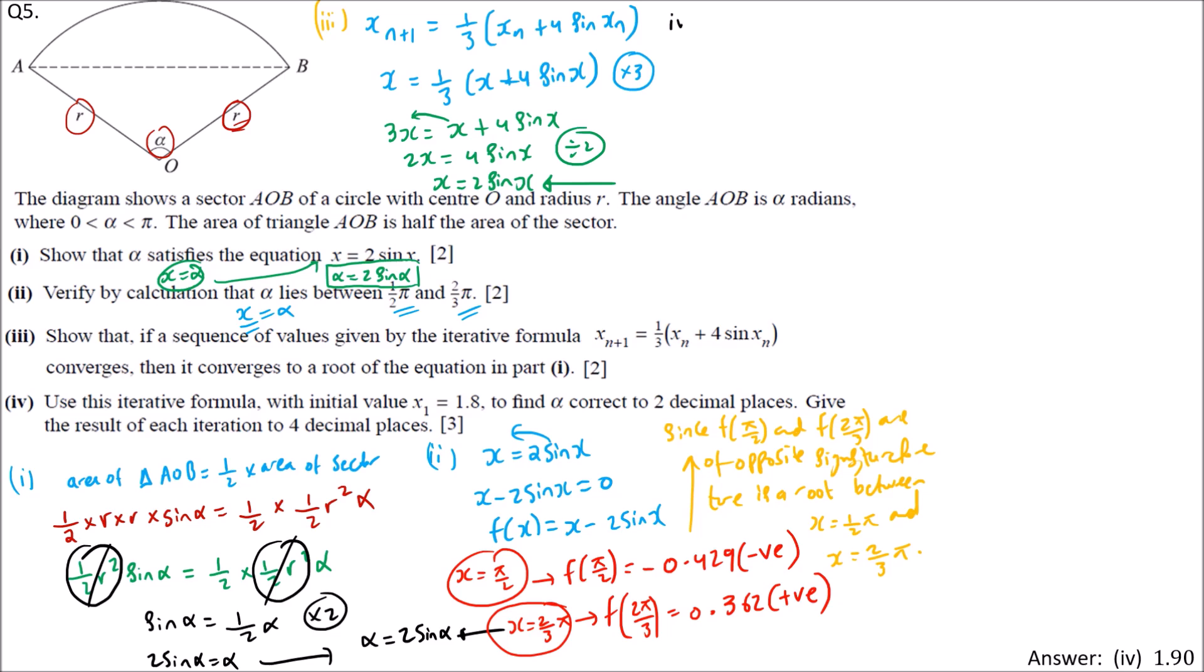Next, the fourth part. We use this iterative formula. We replace x_n with 0.8 to start, the initial value. We need the root to 2dp, each iteration to 4dp. The first value x_n is 0.8, and we replace n by 1 to get x_2.